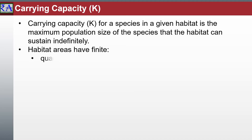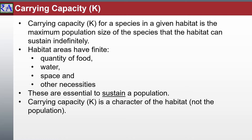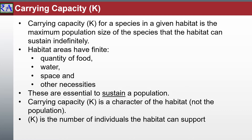A given habitat area has a finite quantity of food, water, space, and other necessities essential to sustain a population. The carrying capacity of a species in an environment is the maximum population size that the environment can sustain indefinitely, given the food, habitat, water, and other necessities. The carrying capacity is the number of individuals the habitat can support without significant negative impacts to the population and the capacity of the habitat to provide essential resources. Carrying capacity is a character of the habitat, not the animal population living there.